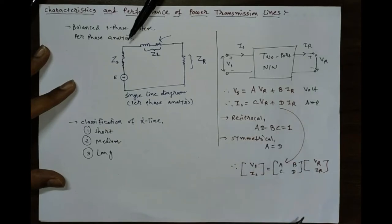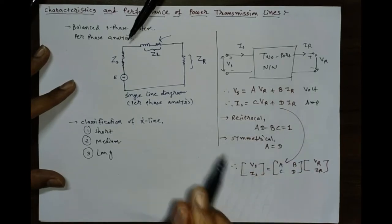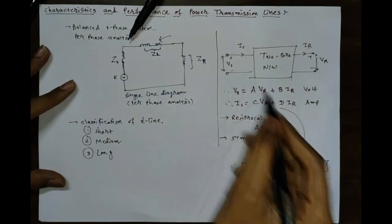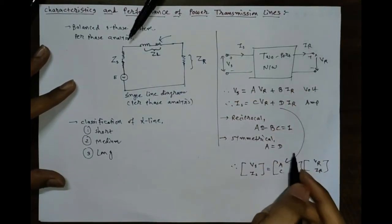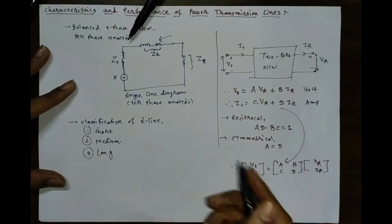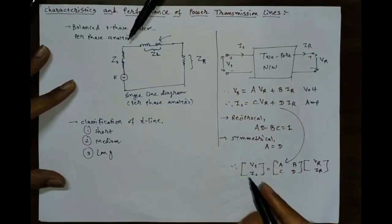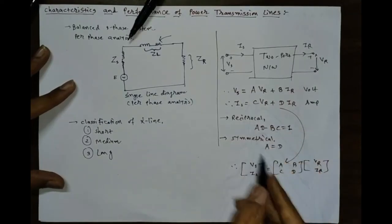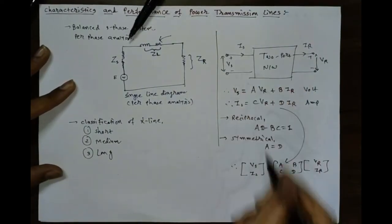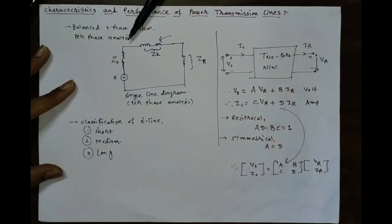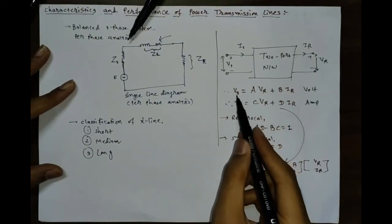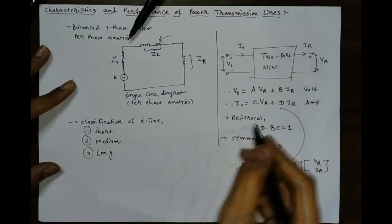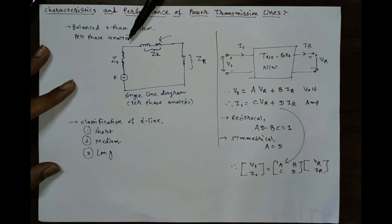The ABCD constants depend on the configuration of your system. In case of short transmission line, medium transmission line, and long transmission line, the configuration will be different and we will have different values of the ABCD parameters. Using these values, we can analyze VS, IS, VR, and IR, which will then be used to find out voltage regulation and transmission efficiency.